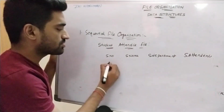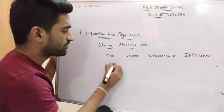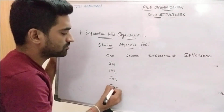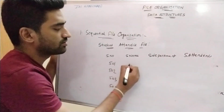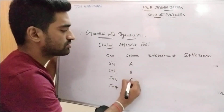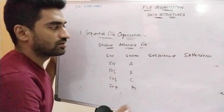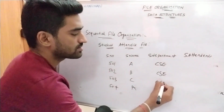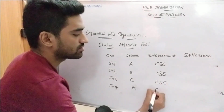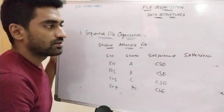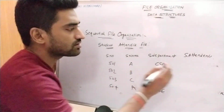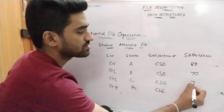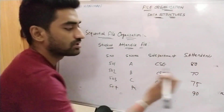For example, student numbers 501, 502, 503, 504; names A, B, C, A; department CSC for all; and previous month attendance is 80%, 70%, 75%, 90% respectively.